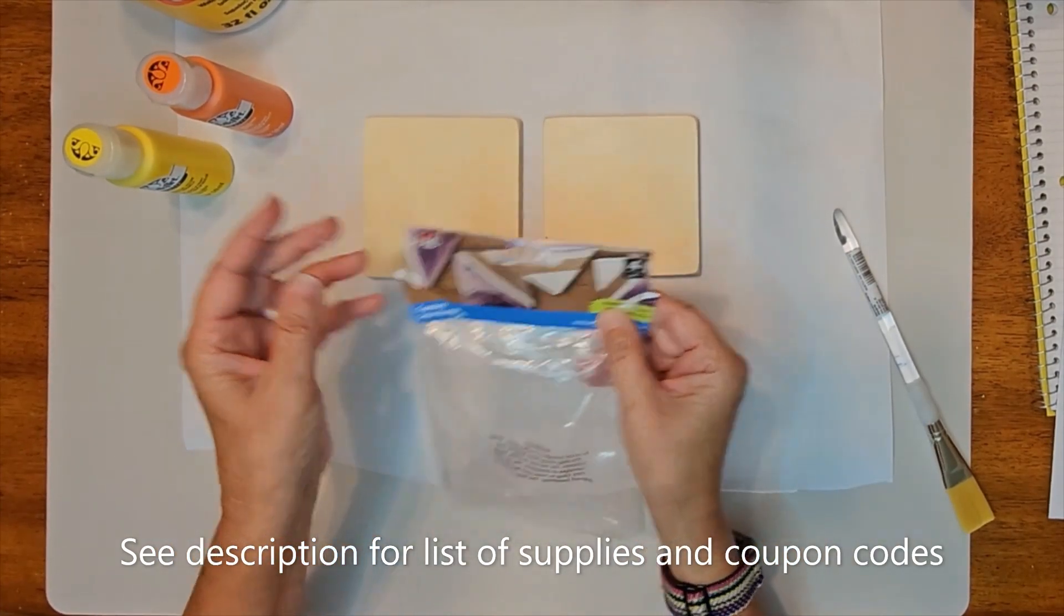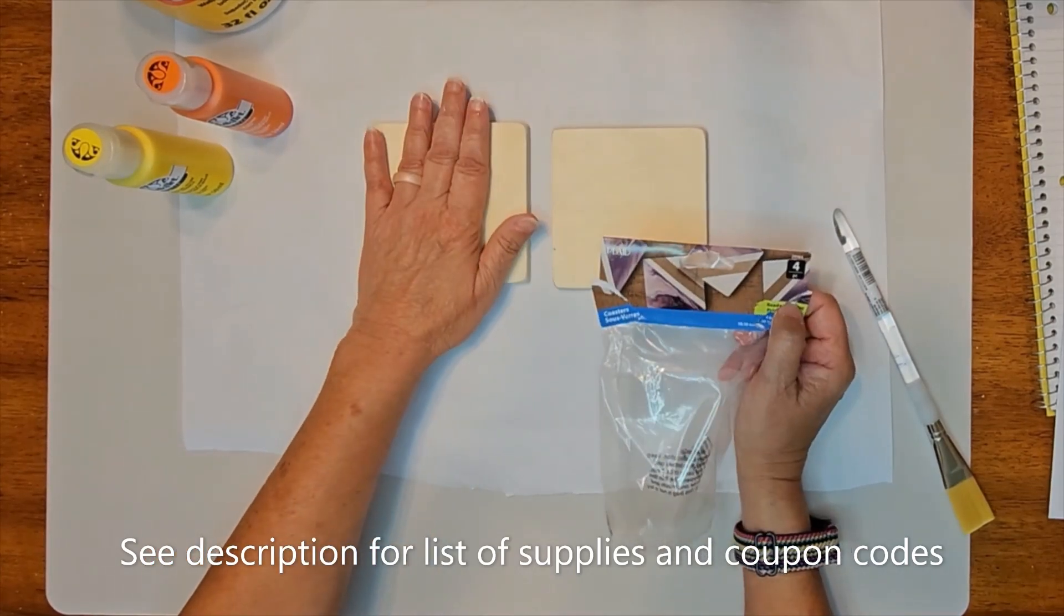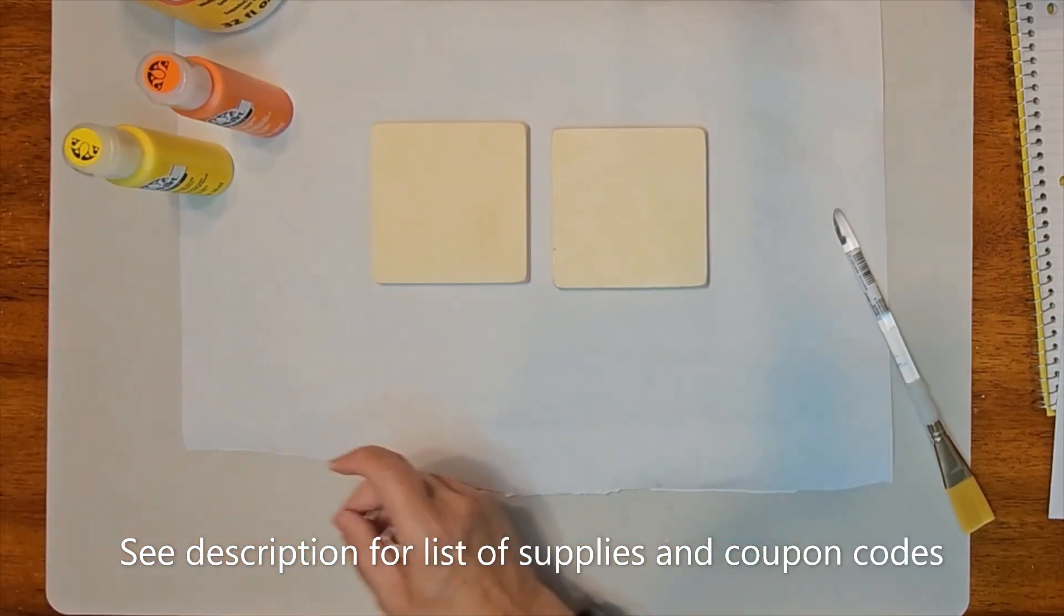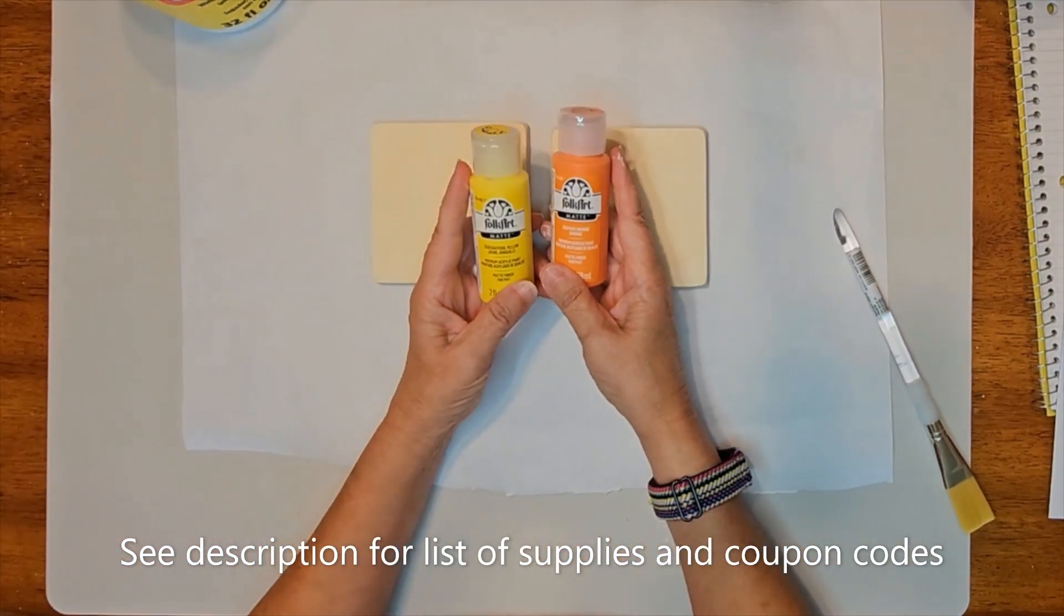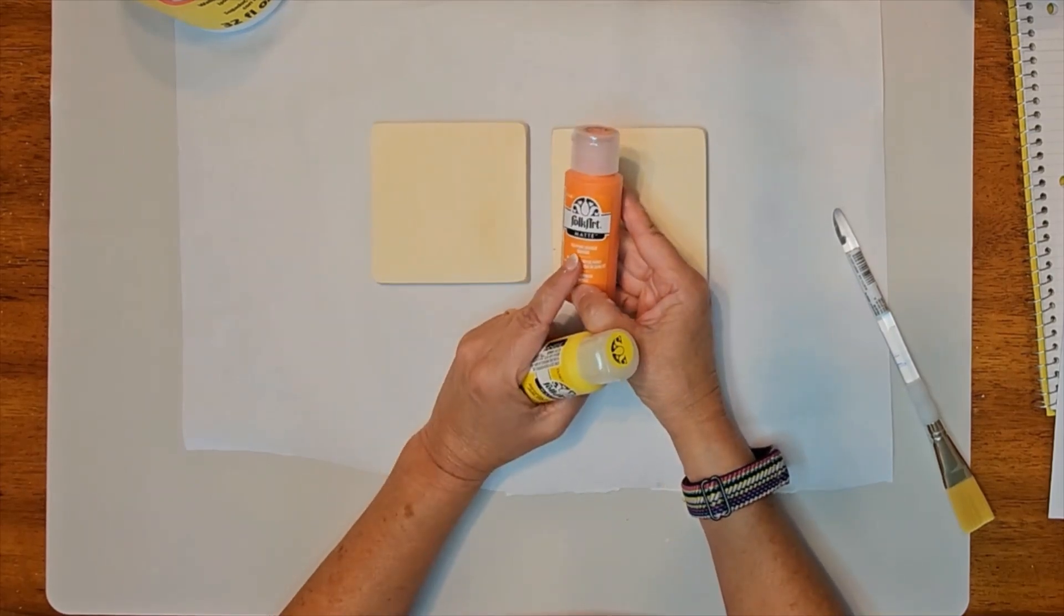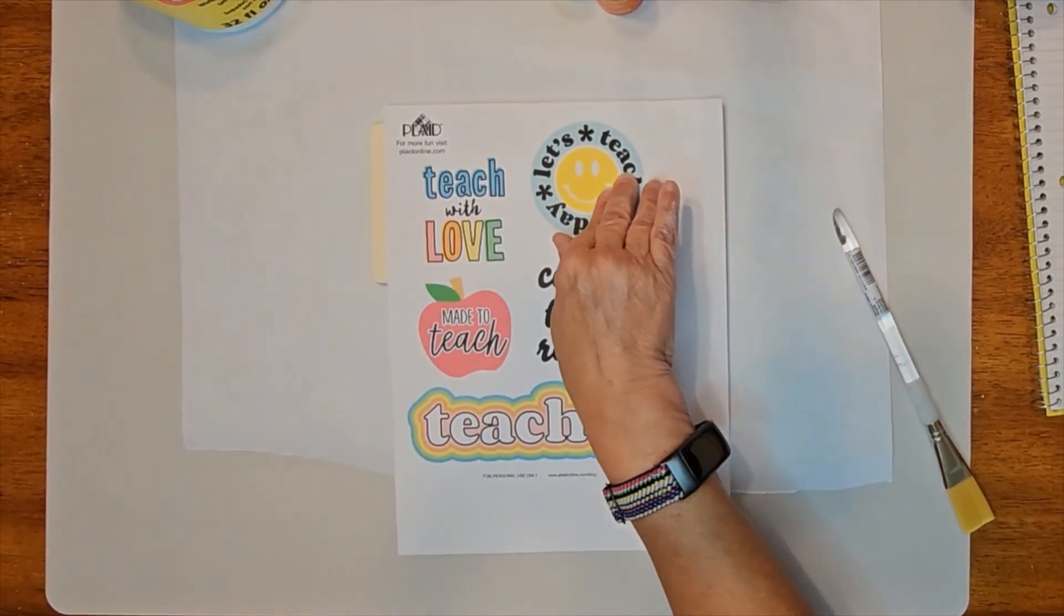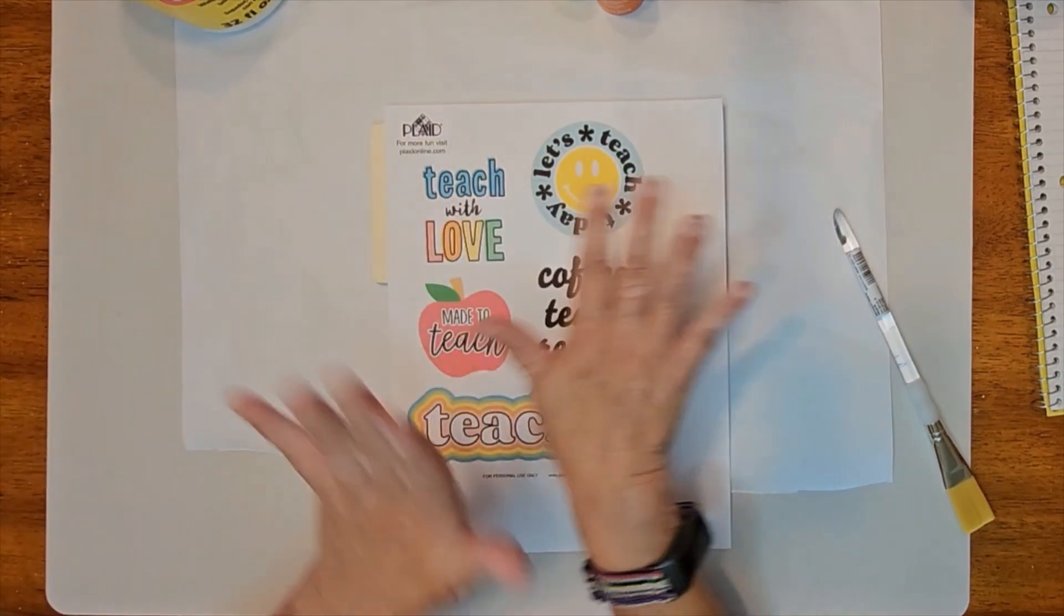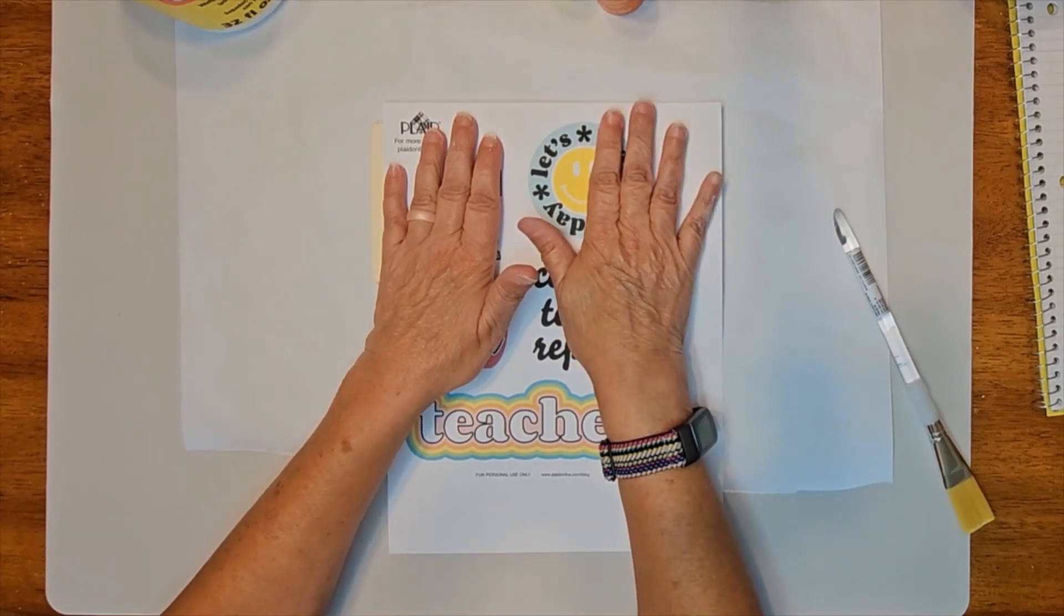I grabbed, I had two of these wooden coasters left. They are from Plaid, and a couple of their Folk Art Matte paints. I grabbed daffodil yellow and pure orange, and these sweet printables on the Plaid Online website. They have a library that has so many printables that you can print out and use in different projects.